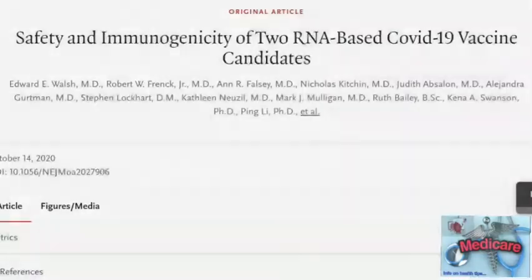Now last month, the Journal of Medicine published an article called Safety and Immunogenicity of Two RNA-Based COVID-19 Vaccine Candidates. These are the two candidates that were put forth by Pfizer and BioNTech. They wanted to see basically how these two candidates did to see which ones would go on to the phase two and phase three trials.